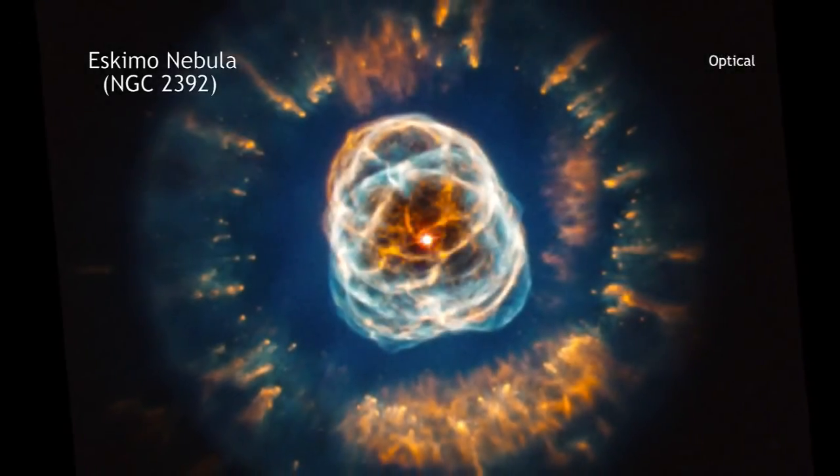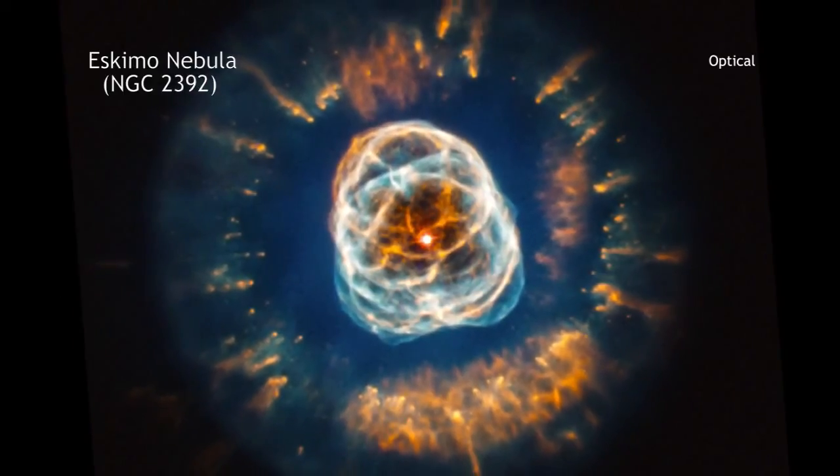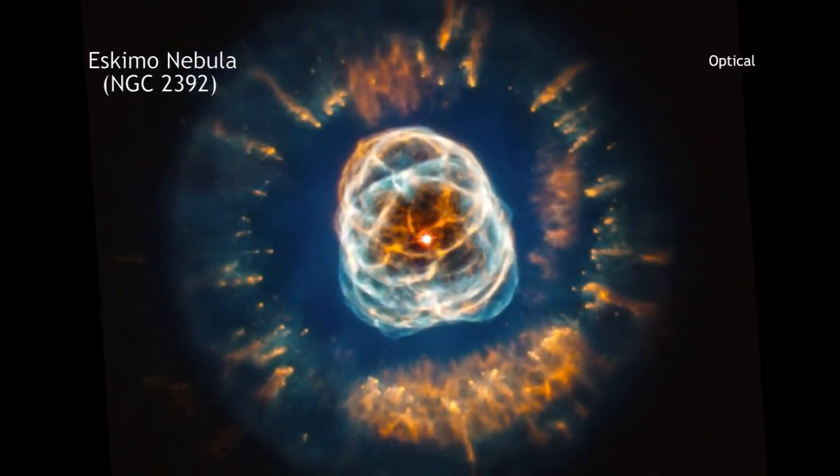Data from the Hubble Space Telescope reveal the intricate pattern of the outer layers of the star that have been ejected.